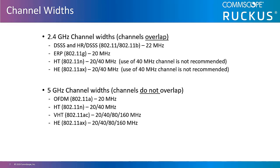802.11ac only operates within the 5 gigahertz band. When the phrase 'dual band 802.11ac' is used in marketing literature to describe access points, it is truly misleading. What it really means is that such devices are using 802.11n in the 2.4 gigahertz band and 802.11ac in the 5 gigahertz band.